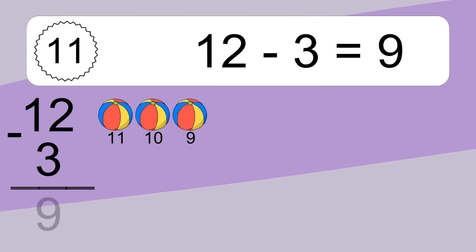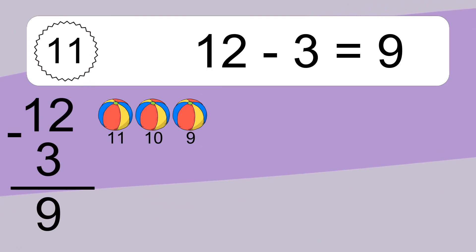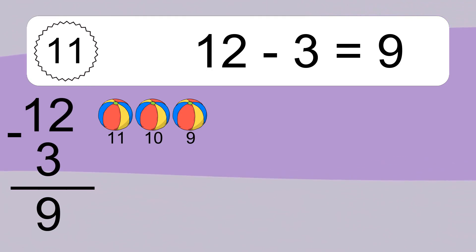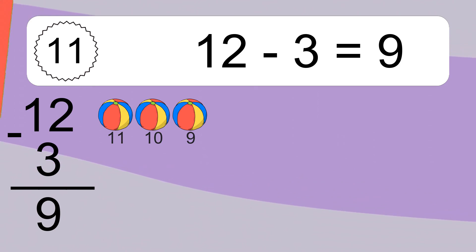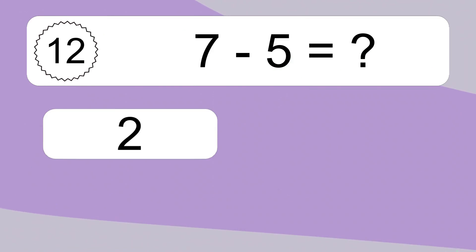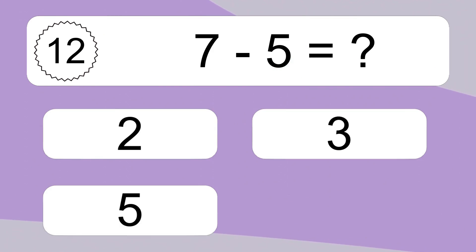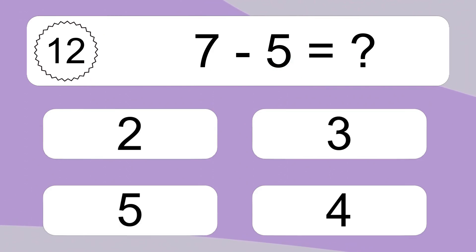12 minus 3 equals what? 12 minus 3 equals 9. Let's count it. 11, 10, 9.